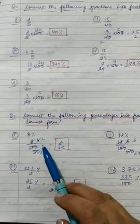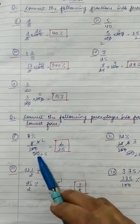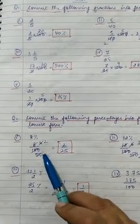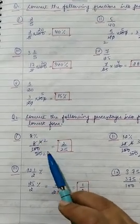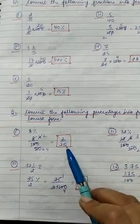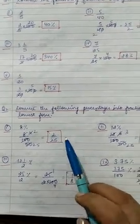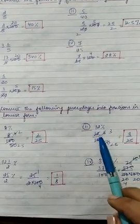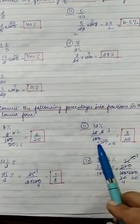Cut 8/100 with the table of two: two fours are eight, two fifties are hundred. Again cancel with table of two: two and twenty-five. So 2/25 is the lowest form. Next, 12% — 12 upon 100, after cancellation you will get 3/25.